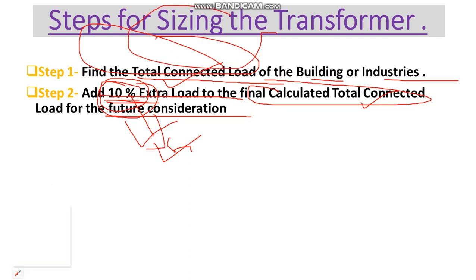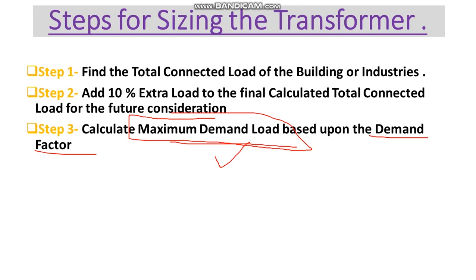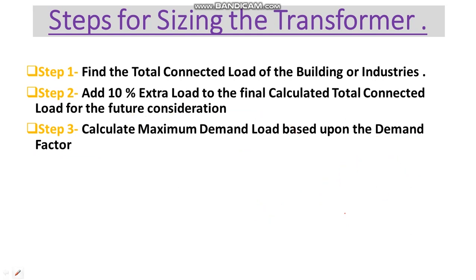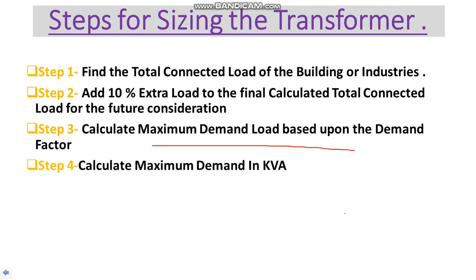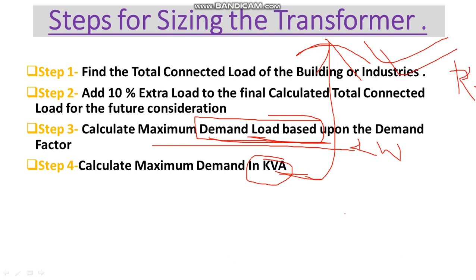In Step 3 we have to calculate the maximum demand load based upon the demand factor. We will not always switch on the whole total connected load — for a commercial building we generally consider 80% of the load is on at any time, while 20% will be switched off. In Step 4, if our calculated maximum demand load is in kilowatts, we have to convert it into kVA, which is apparent power, because our transformer is rated in kVA.